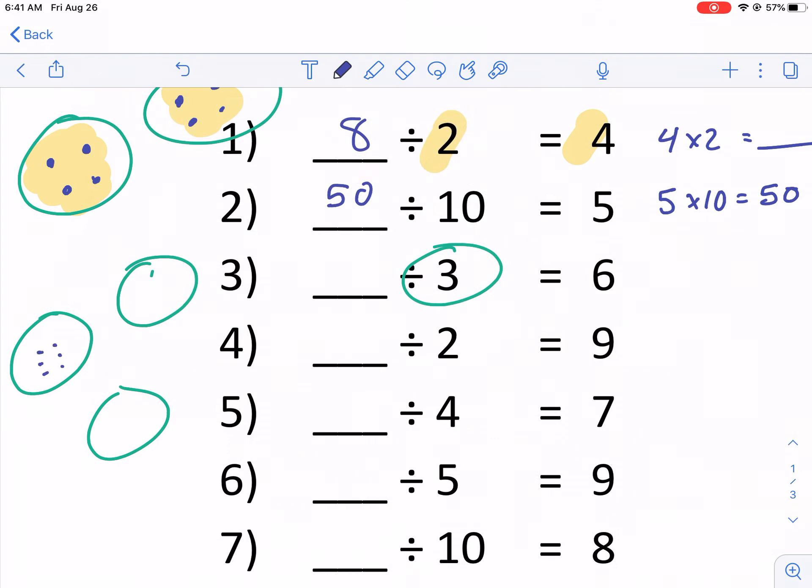So 1, 2, 3, 4, 5, 6. 1, 2, 3, 4, 5, 6. 1, 2, 3, 4, 5, 6. If I were to count all of these groups together, I would have 18.